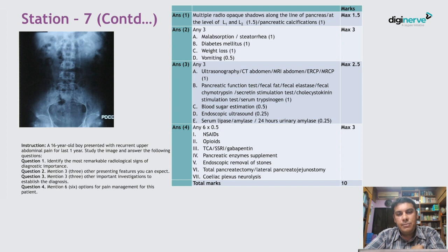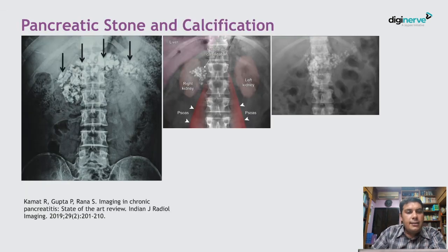Note that if you write ultrasonogram and CT abdomen together, you will get marks for only one, as similar investigations are grouped. Regarding pain management, options include NSAIDs, opioids, tricyclic antidepressants, SSRIs, or gabapentin. We can also give pancreatic enzyme supplements, endoscopic removal of stones, total pancreatectomy or lateral pancreaticojejunostomy, and celiac plexus neurolysis.